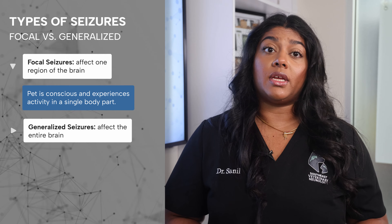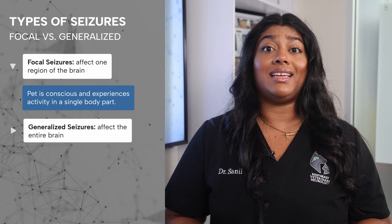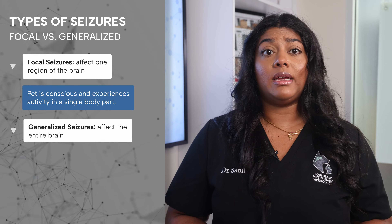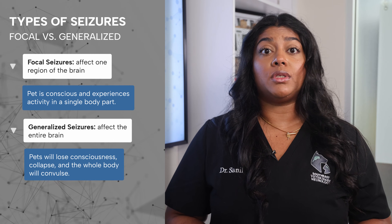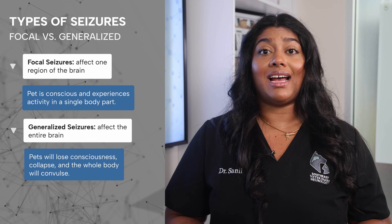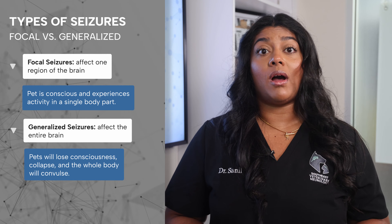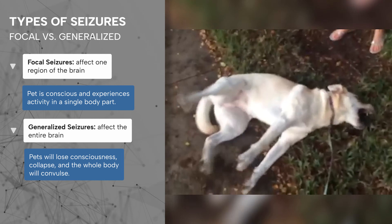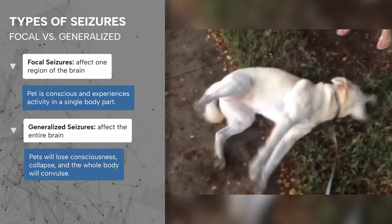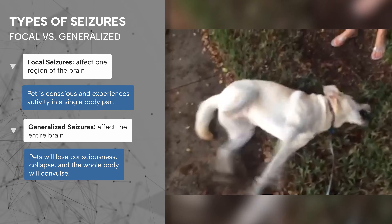Generalized seizures, on the other hand, affect the entire brain. In a classic episode, your pet will lose consciousness, collapse, and the whole body will convulse. Sometimes, they may also have involuntary defecation and urination.